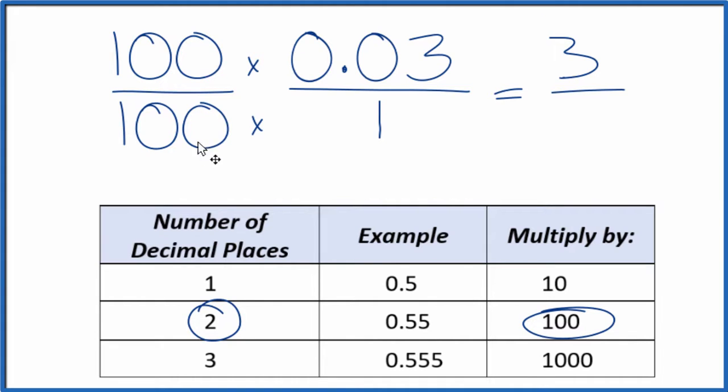100 divided by 100, that's just equal to 1. So we're multiplying this by 1. And again, we're not changing the value, just the way it's represented. So 100 times 1, that's 100.